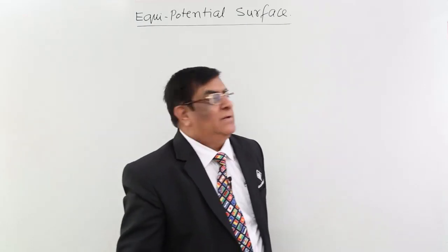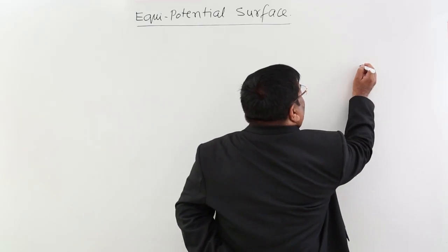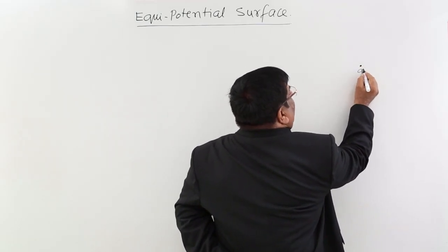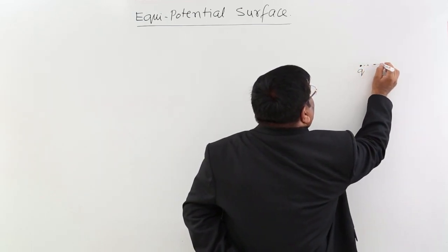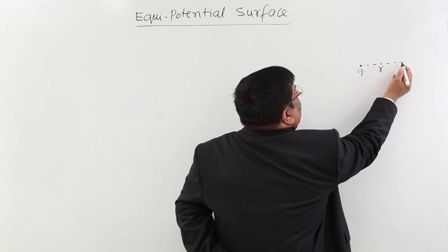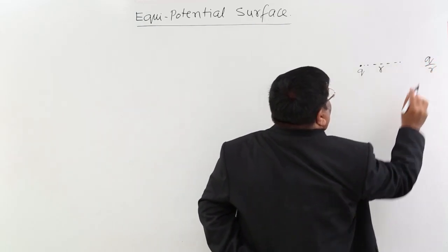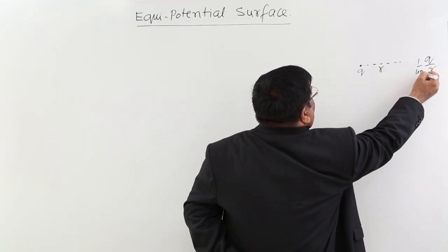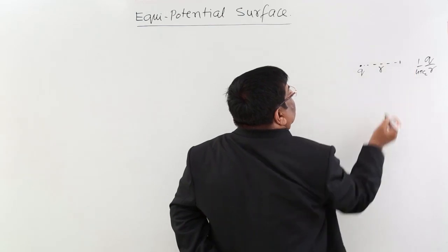Let me give you a simple example. There is a point charge — a charged particle which has got a certain charge q. At a distance r, it has a potential, and that potential is (1/4πε₀)(q/r).